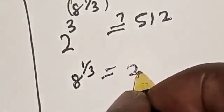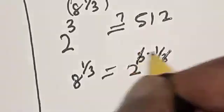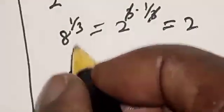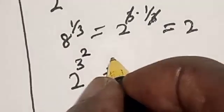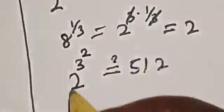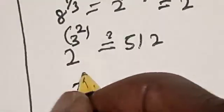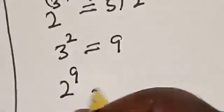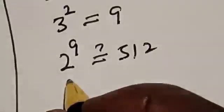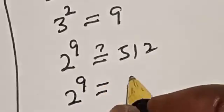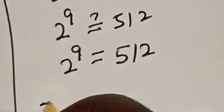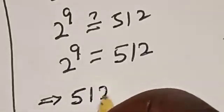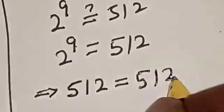8 raised to power 1 over 3 is equal to 2 raised to power 3 multiplied by 1 over 3, which simplifies to 2. Now replacing, we have 2 raised to power 3 raised to power 2 must equal 512. Then 3 squared is equal to 9, so we have 2 raised to power 9 must equal 512. And indeed 2 raised to power 9 is equal to 512. So 512 on the left-hand side equals 512 on the right-hand side — we satisfy the given equation.